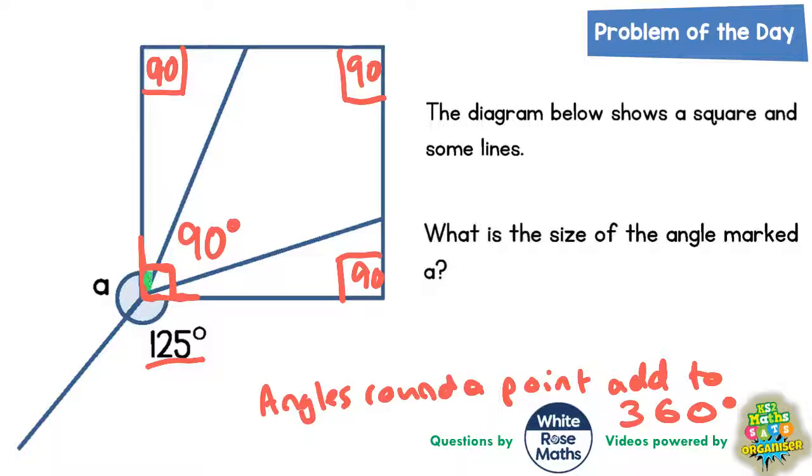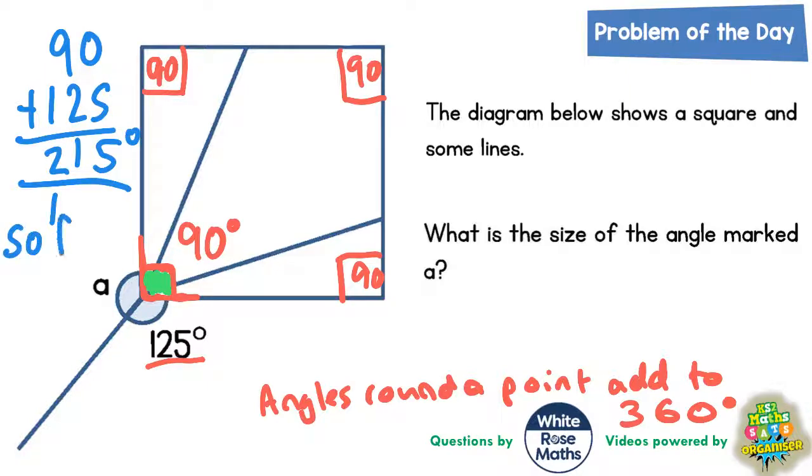So if we've got 90 degrees around the point, plus an extra 125, let's see what that makes so far. So 0 plus 5 is 5, 9 plus 2 is 11, put the 1 in, carry the 1, 1 plus 1 is 2. So that means we've got 215 degrees so far.